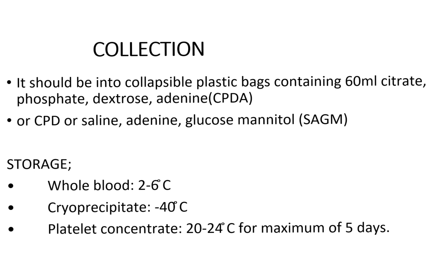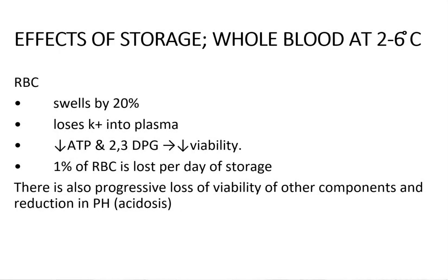Storage: whole blood is stored at 2 to 6 degrees Celsius. The changes seen in the RBCs include swelling by 20 percent, RBC loses potassium into the plasma, there is reduction in ATP and 2,3-DPG which leads to reduction in viability of the red blood cells. One percent of red blood cells is lost per day of storage, and there is also progressive loss of viability of other components and reduction in pH.